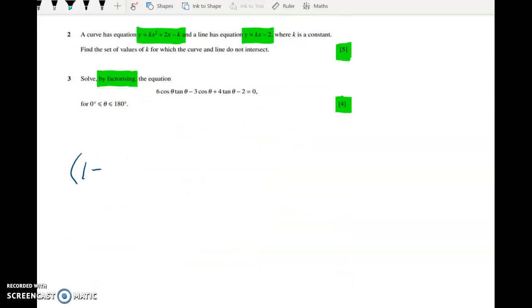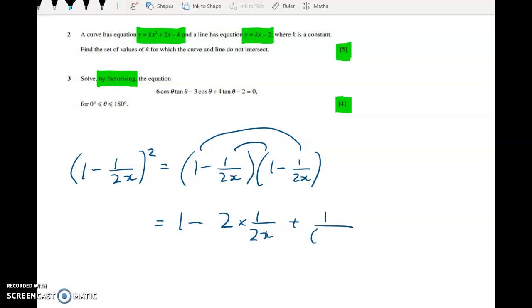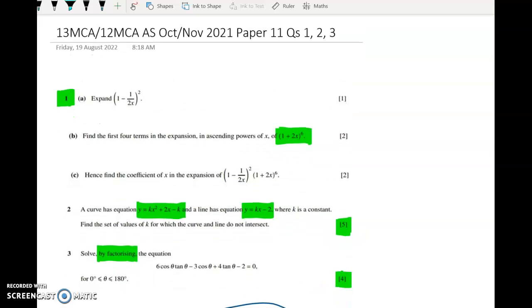So question 1a is a very easy expansion. I'm going to write it out fully here. I suspect many of you skipped that line. I think that's okay in this case, as long as you don't screw it up. So in here we get 1 minus 2 times 1 over 2x, for those middle two terms, plus 1 over 2x squared, which gives me 1 minus 1 over x, plus 1 over 4x squared. I think that's one mark.